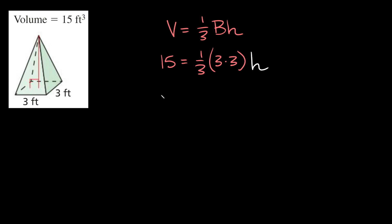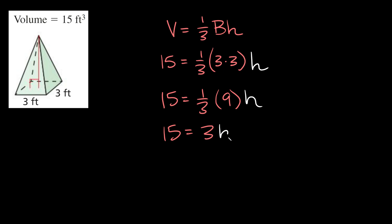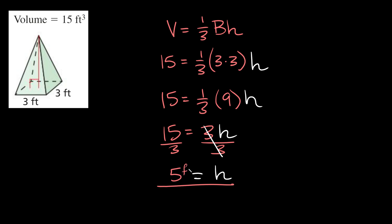Now let's simplify. We get that 15 is equal to one third times nine times the height. One third times nine — or in other words, nine divided by three — is equal to three. So we get 15 is equal to three times H. To solve for H, we divide both sides by three, giving us H is equal to 15 divided by three, which is five. Don't forget your units — we're working with feet, so the height of this pyramid is five feet.